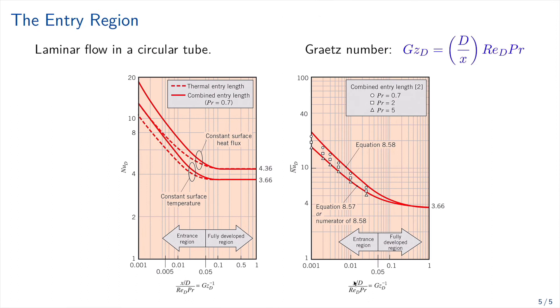And that correlations are summarized in these two graphs. So on the left-hand side, we have local coefficients. And in the right-hand side, we have average coefficients. So if we look into the first table for local coefficients, on the x-axis, we have this dimensionless number.